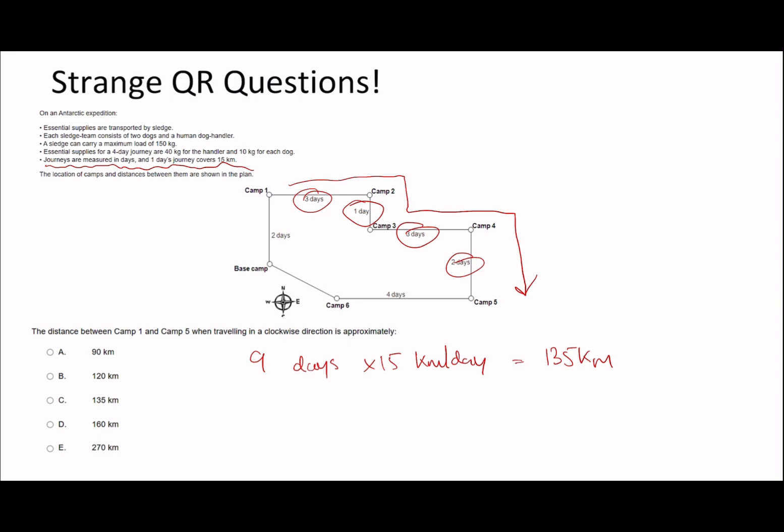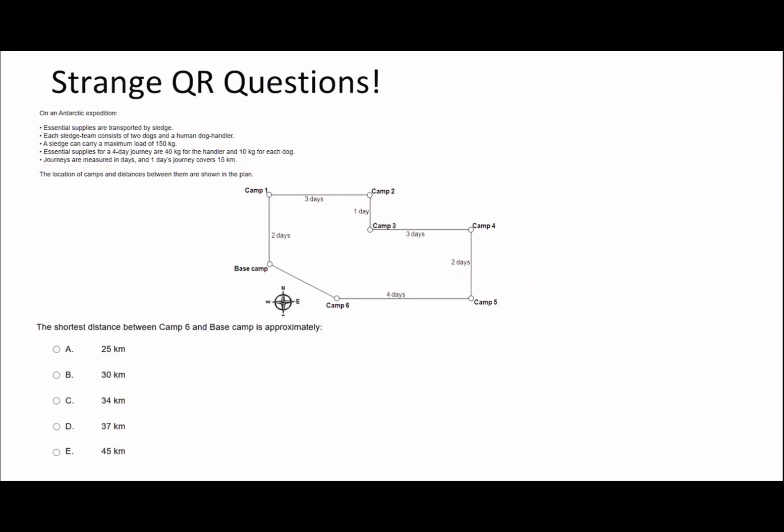Let's go on to the next question then. The shortest distance between camp 6 and base camp is approximately. So camp 6 and base camp, the shortest distance is going to be this hypotenuse here, right? So we're going to have to use Pythagoras. But importantly, it's like, how do we figure out what these values are? Well, you can see this is 3 days. This is 3 days. This total up here is 6 days, but then this over here is 4 days. That means this distance here must just be 2 days. And we can use a similar principle here. So if this is 1 day and this is 2 days, this whole thing must be 3 days. So this must be 1 day.